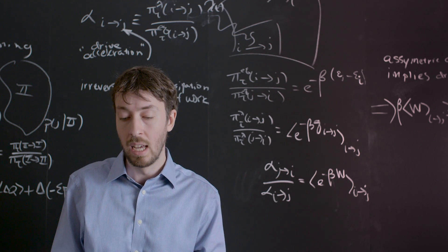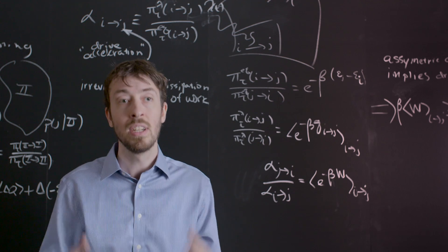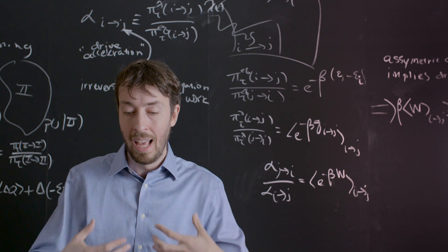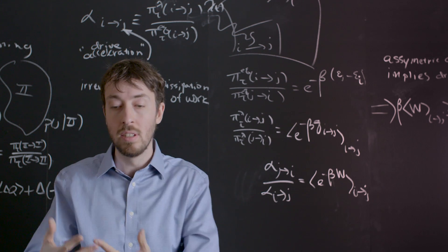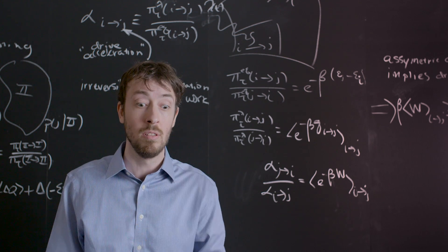I think emunah, a sort of faithfulness to a relationship with the Kadosh Baruch Hu, is about having a certain attitude about what your intention is and what your goals are in the face of that uncertainty. Because you could look at that uncertainty and you could say,